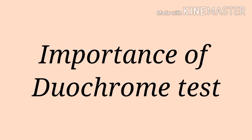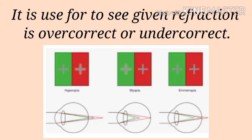Why is the duochrome test done? The duochrome test is most commonly used in subjective refraction procedures. It is used to see whether the given spherical correction is under-corrected or over-corrected. In basic terms, it is used to check whether the given refraction is correct or not.